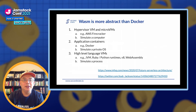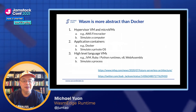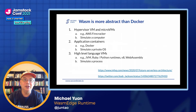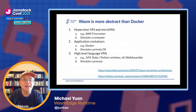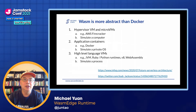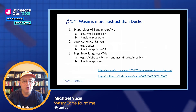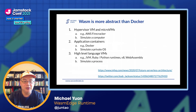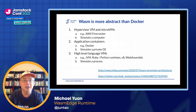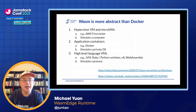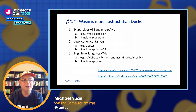WebAssembly is more abstract than Docker. There are three levels of runtime or container abstraction. The first is the VM, which simulates a full computer with all the overhead that entails. The second, where the industry is right now, is application containers — Docker, CRI-O, and similar — which simulate a private OS. That's significantly faster than simulating a full VM, but it comes with the overhead of the OS: libraries, network, file system simulation. High-level language VMs, starting from the JVM and WebAssembly today, simulate a process — a much lighter approach that allows things to start up much faster and run much faster.